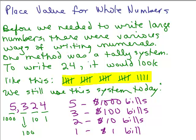So the placement of these digits — remember the digits are from 0 to 9 — is very important. What's also important about a place value system is you might have a 0. Zero is really important. Let's say you didn't have any $10 bills. Then you have to have this placeholder of 0 to tell you there are no $10 bills. If you just wrote 5, 3, 4, you would think that was 534 — 5 hundreds, 3 tens, and 4 ones.